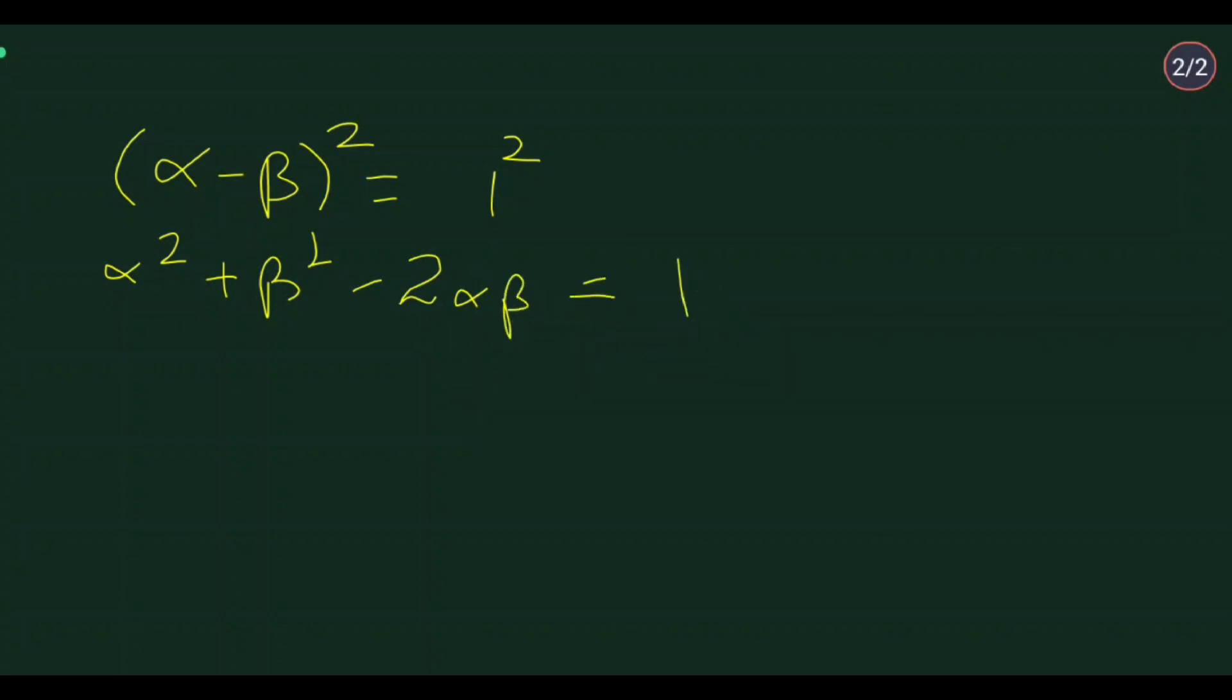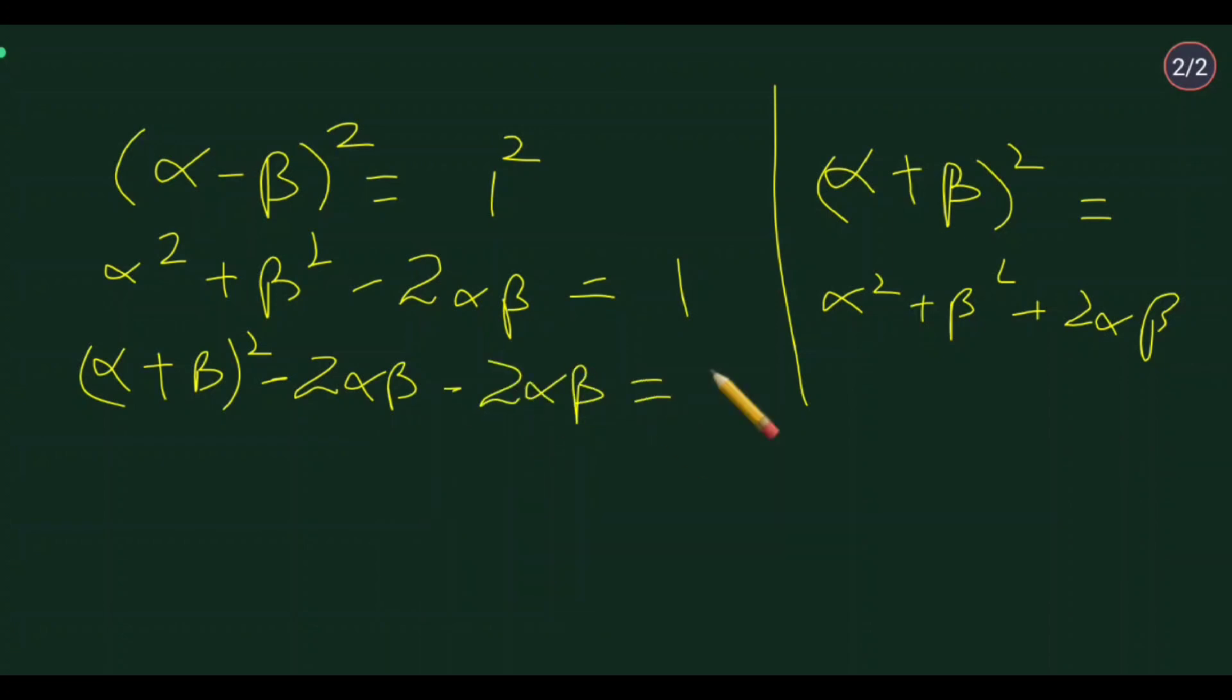We know αβ = k, so we have that term. But how do we get α² + β²? You know that when you square (α + β), you get α² + β² + 2αβ. So we can write α² + β² = (α + β)² - 2αβ and substitute this into our equation.